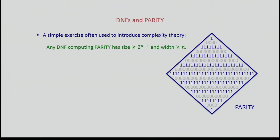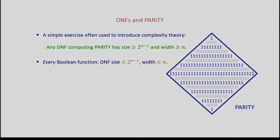The starting point of this research is a very simple exercise often used to introduce complexity theory. Any DNF that computes the parity function has to have size at least 2^(N-1) and width at least N. It's not hard to prove — every one-input has to have its own subcube, and that's the proof. Equally easy is the fact that every boolean function can be computed by a DNF of size at most 2^(N-1) and width at most N.